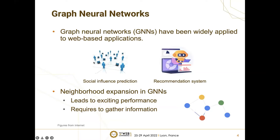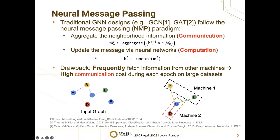In recent years, we have witnessed the success of applying graph neural networks into different real-world applications, like social influence prediction and recommendation systems. Previous study attributes this success to the use of neighborhood expansion in graph neural networks. In short, graph neural networks aggregate the features of each node with its neighbors, and thus they are able to capture more information than traditional MLP. Traditional graph neural network designs follow a specific pattern, which we refer to as the neural message parsing paradigm.